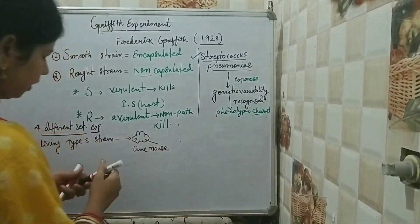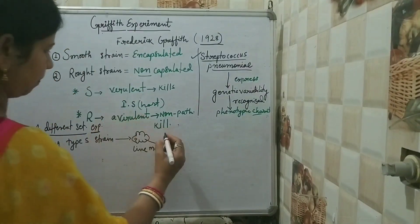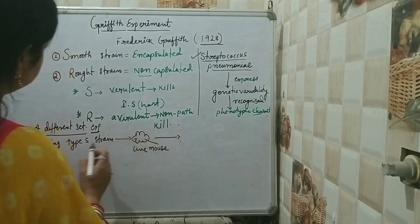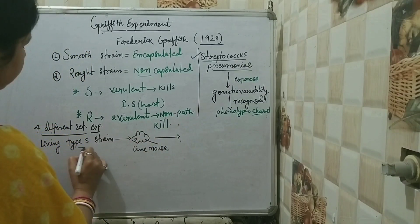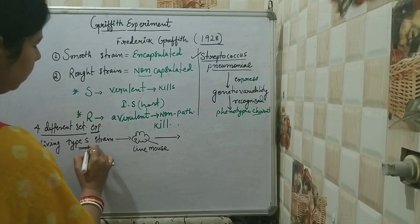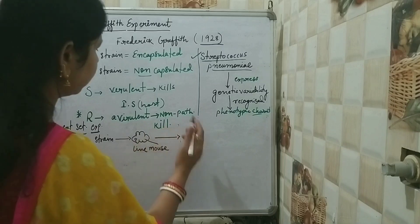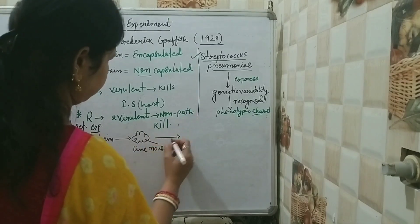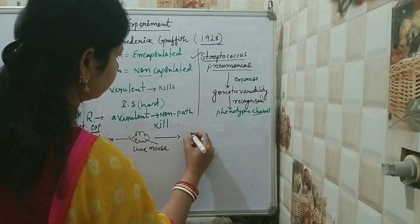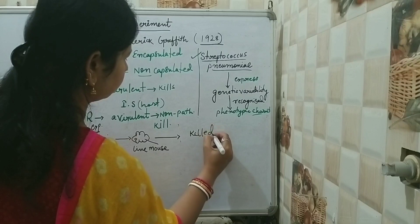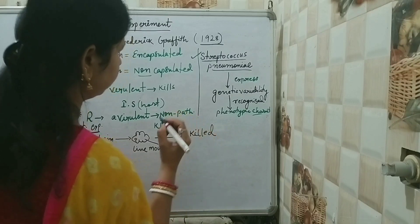Since type S is a virulent strain, it must kill the host. And so the mouse was killed.